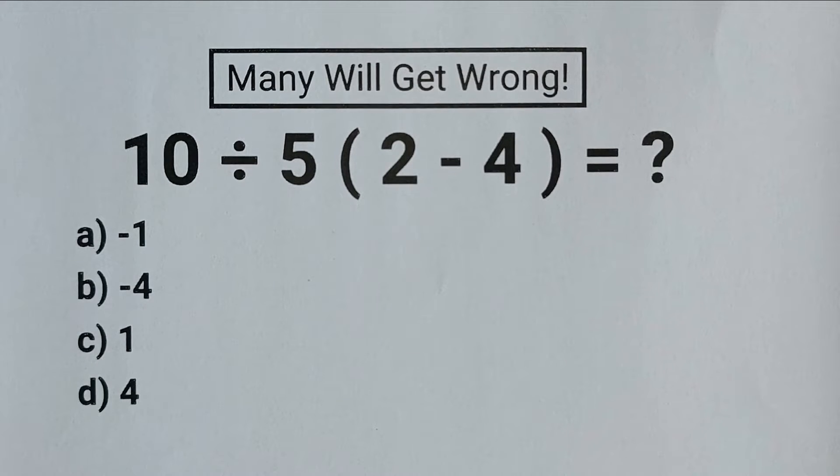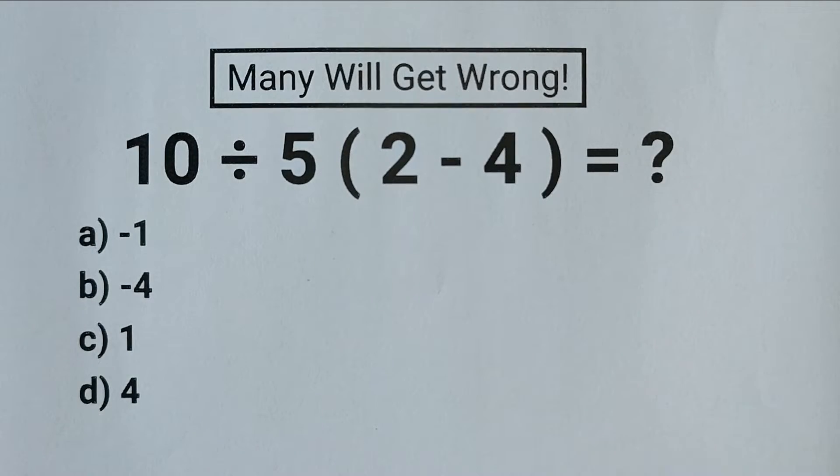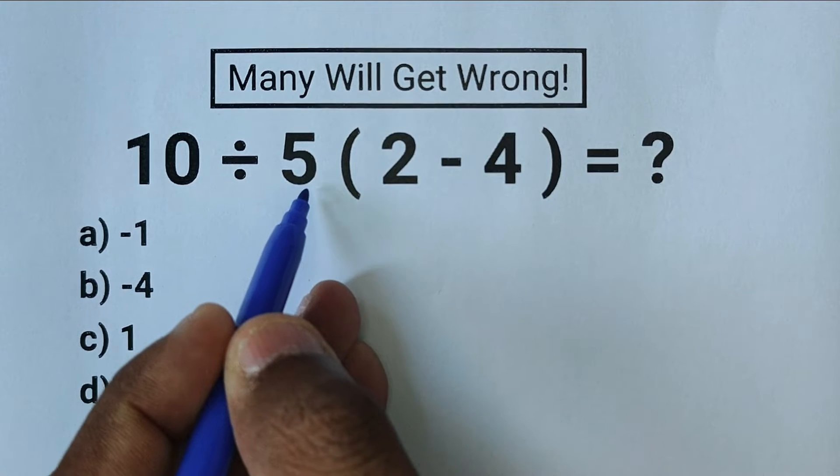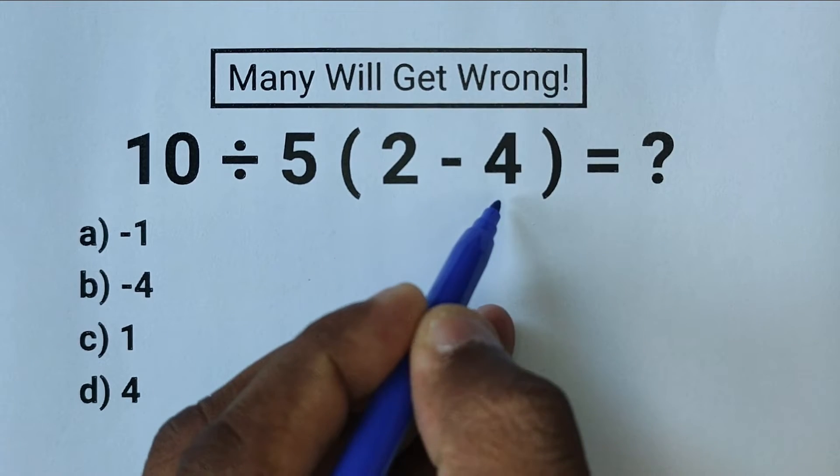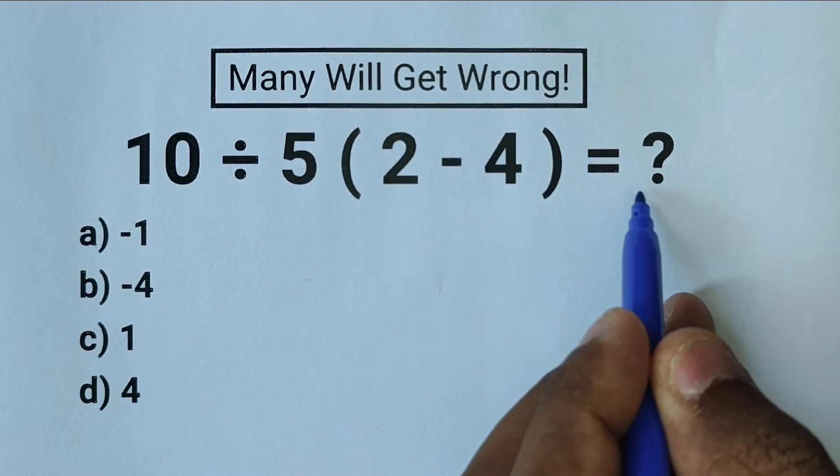Here's another basic math problem but many people get this wrong. The problem is 10 divided by 5 parenthesis 2 minus 4. Which is the correct answer?